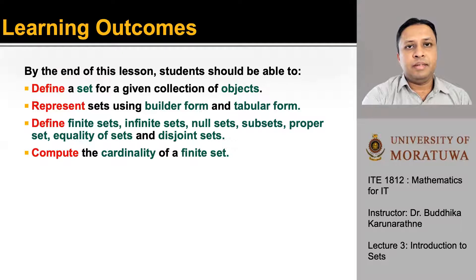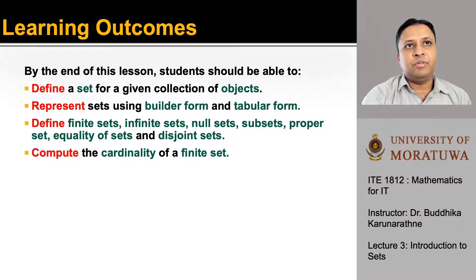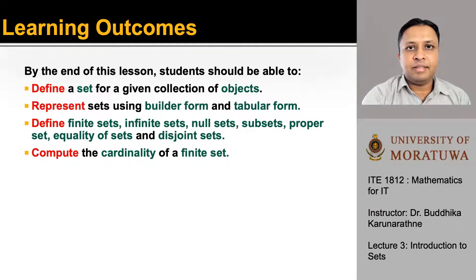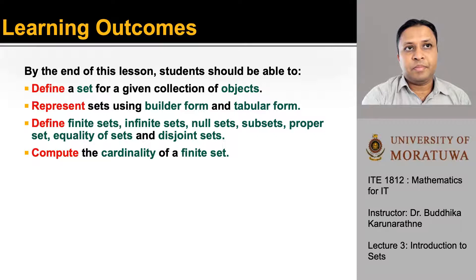Let's first look at the learning outcomes. By the end of this lesson, you should be able to define a set for a given collection of objects and represent sets using builder form and tabular form. You should also be able to define finite sets, infinite sets, null sets, subsets, proper sets, equality of sets, and disjoint sets, and compute the cardinality of a finite set.